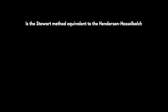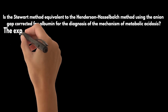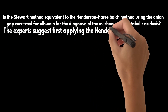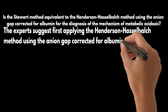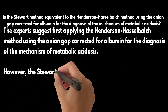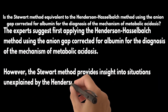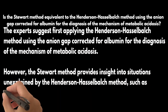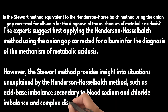Is the Stewart method equivalent to the Henderson-Hasselbalch method using the anion gap corrected for albumin for the diagnosis of the mechanism of metabolic acidosis? Experts suggest first applying the Henderson-Hasselbalch method using the anion gap corrected for albumin. However, the Stewart method provides insight into situations unexplained by Henderson-Hasselbalch, such as acid-base imbalance secondary to blood sodium and chloride imbalance and complex disorders.